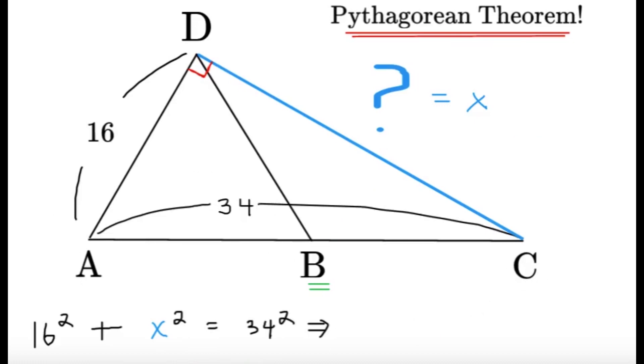And voila, we're just going to use the Pythagorean theorem. 16 squared plus X squared equals 34 squared. 16 squared is 256 plus X squared. This equals 34 squared. Now, 34 times 34, that is, you can work out the math. I think it's 1156. So it's 1156.